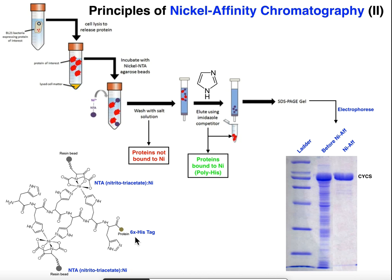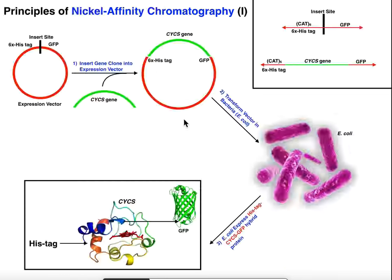There's six of them and what these histidines do, based on their imidazole group which is their R group, is they can actually bind certain things. It turns out that histidines are really good at binding nickel, and we're going to exploit that property in nickel affinity chromatography to separate and isolate proteins with a 6x histag.